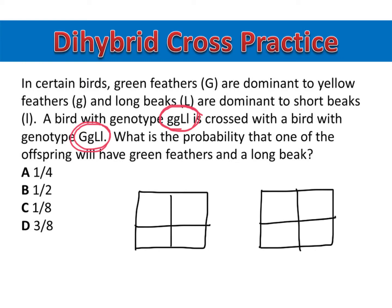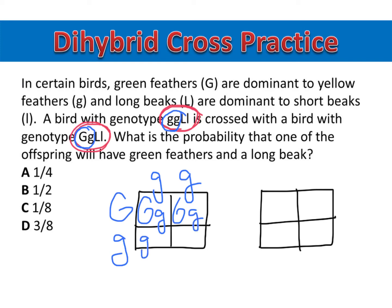My first Punnett square will be about feather color. So I have a homozygous recessive that I'll put across the top, and a heterozygous bird that I'll put down the side, and now I can fill that in. My second Punnett square will be about beak length. So I've got a heterozygote across the top and a heterozygote down the side, and I'll fill that in.